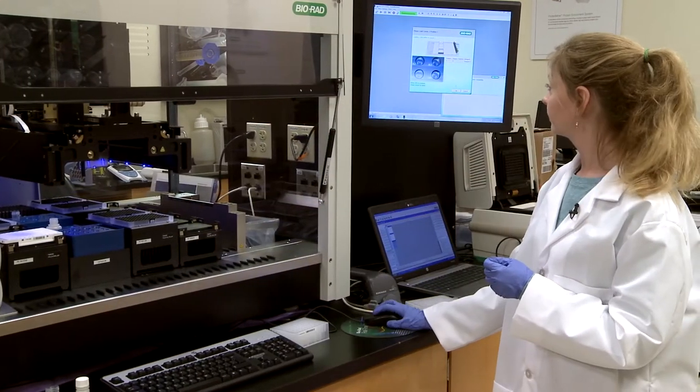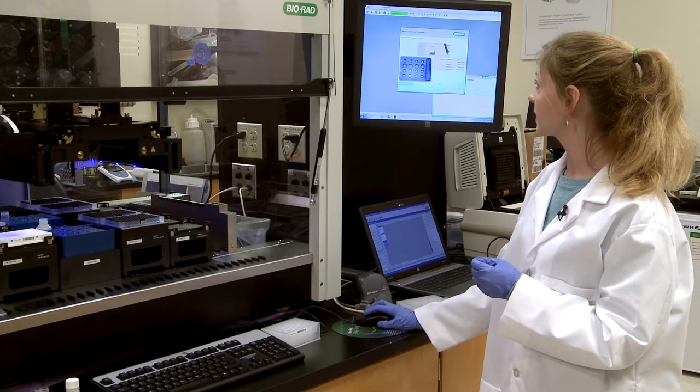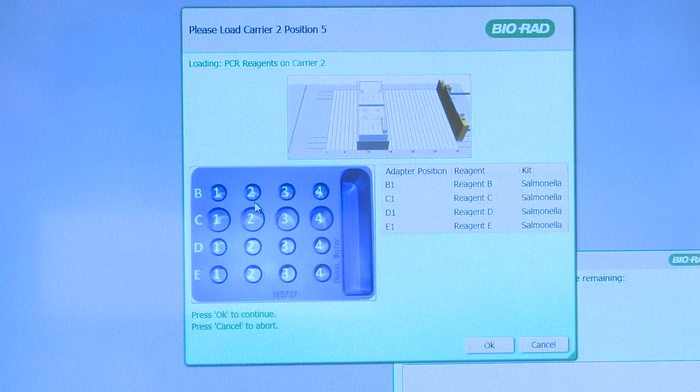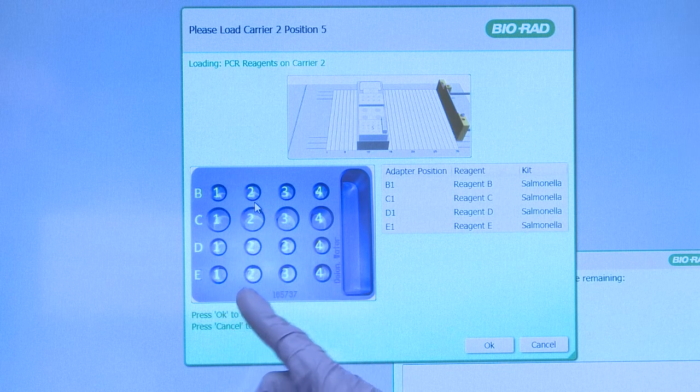Easy so far. Click OK. What's next? Now our PCR reagents get added into this block. You'll see they get added into positions B, C, D and E.